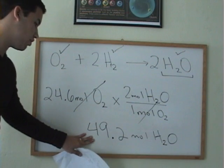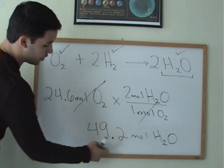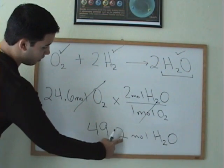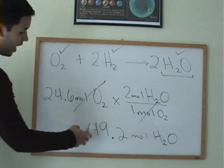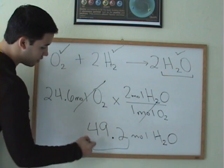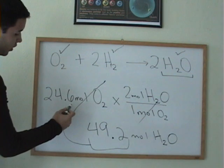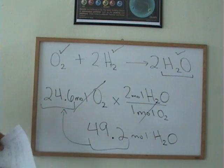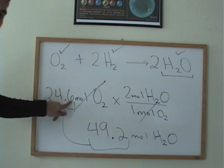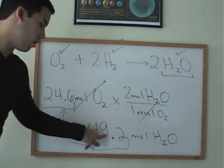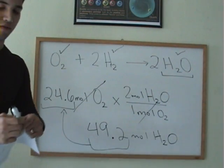Notice that in my answer, I have three significant figures. One, two, three. Three digits. I got those three digits from this number over here. Whatever they give me. This has three significant figures. Therefore, my answer also needs to have three significant figures.